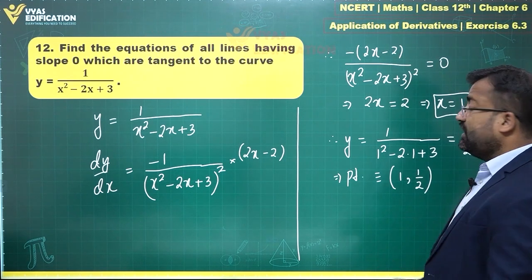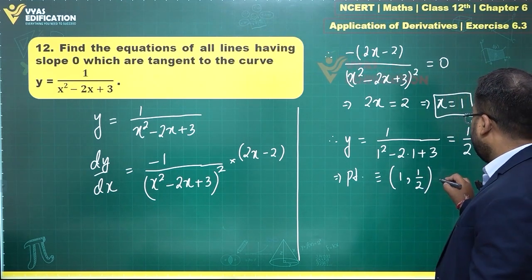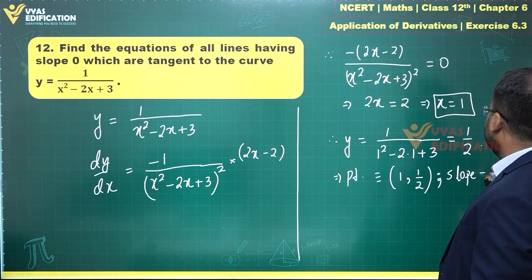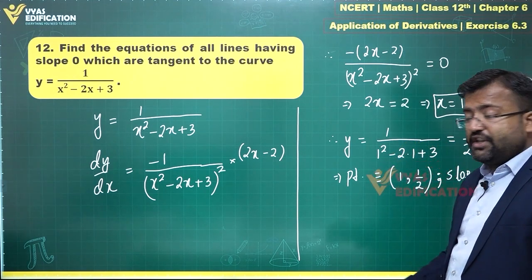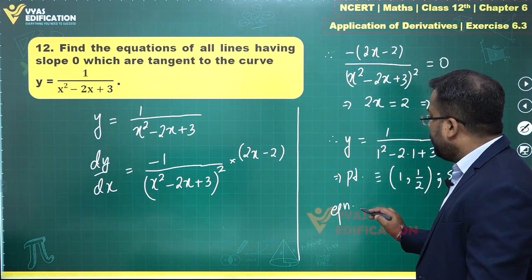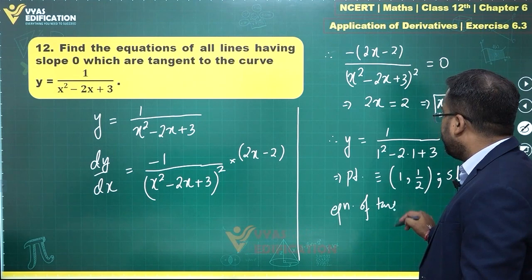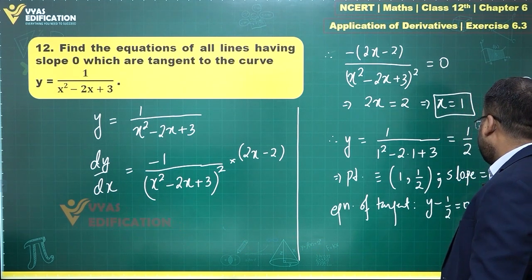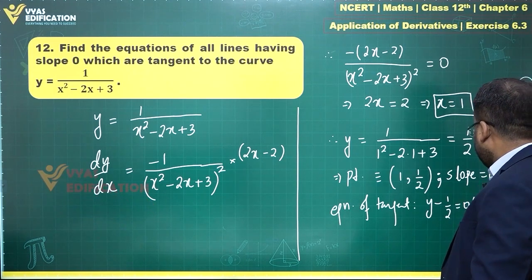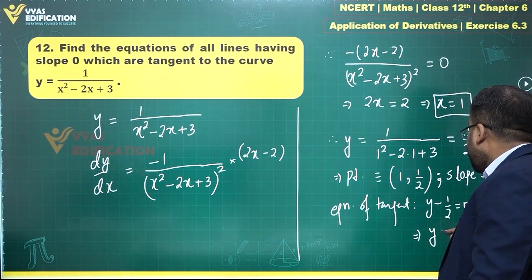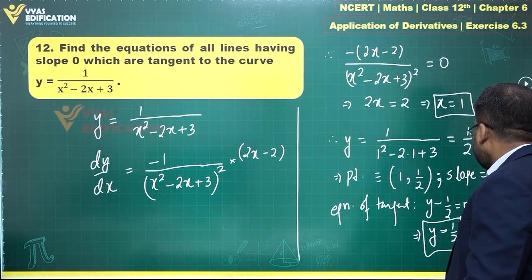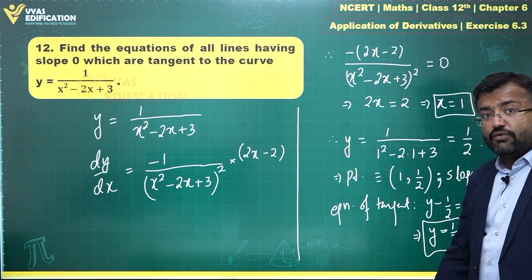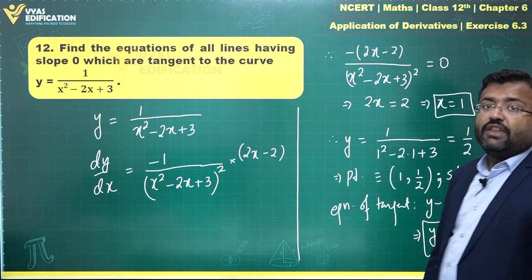Therefore the point is (1, 1/2). The point at which you draw the tangent is this. What about the slope? The slope is 0. Therefore the equation of tangent will be: y minus 1/2 equals 0 times x minus 1. This goes and this will give me y equals 1/2 as my answer. This is the required answer for this question.